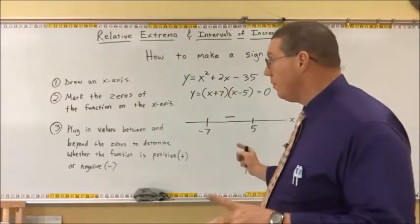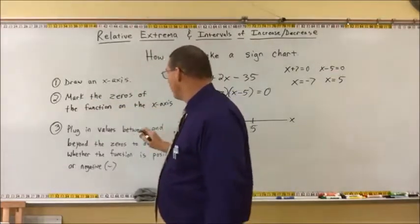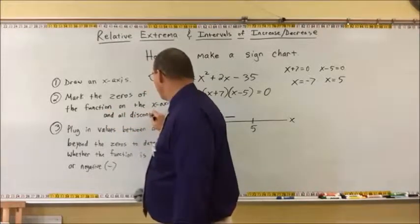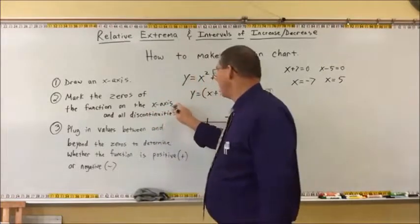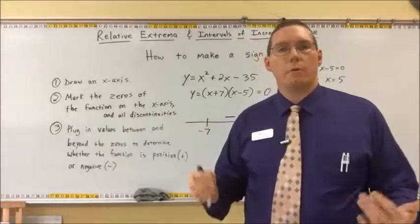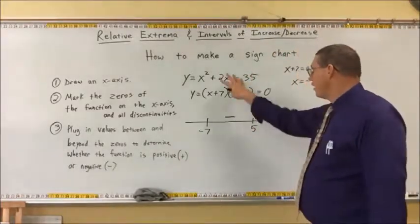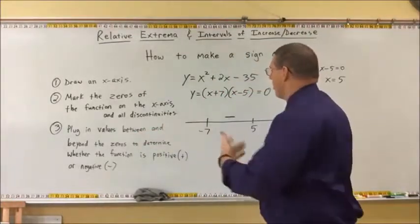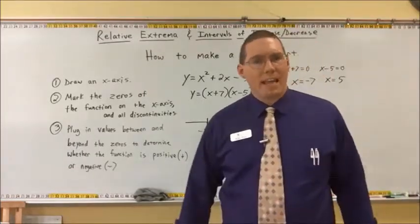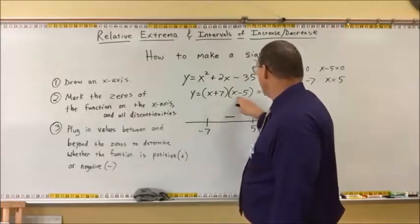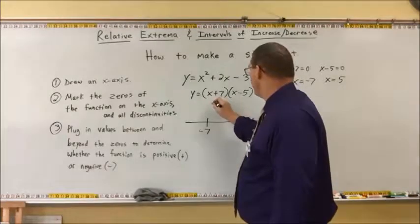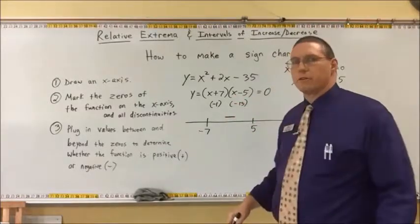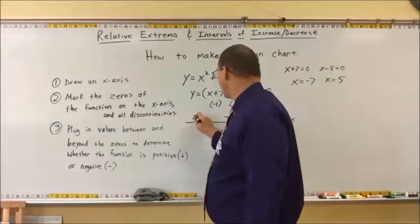This is assuming it's a continuous function. If there were a discontinuity in the function, in step 2 I would also mark all discontinuities on the x-axis, because discontinuities are a reason to separate the function. But this function has no discontinuities. Now, beyond the zeros — what's a number less than negative 7? How about negative 8? Plugging into the factored form: (−8 + 7) = −1 and (−8 − 5) = −13, and (−1)(−13) = positive 13. So less than negative 7, the values are all positive.